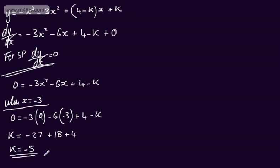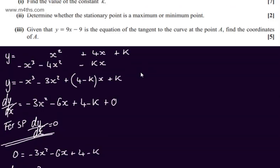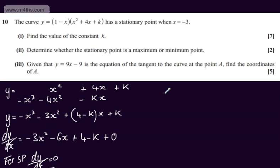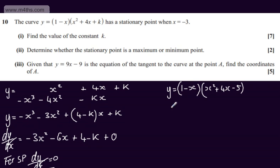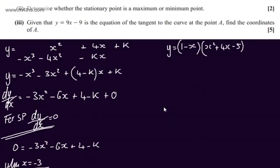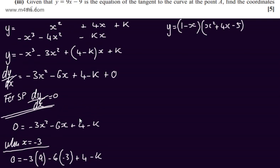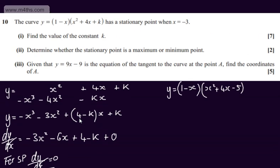So I could rewrite this and have my equation: y equals 1 minus x multiplied by x squared plus 4x minus 5. We could look to factor this again if we wanted, but we're not asked to do that. We're simply asked to find the value of the constant k, and that is minus 5.